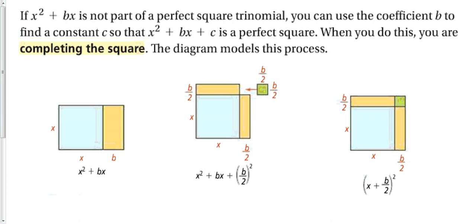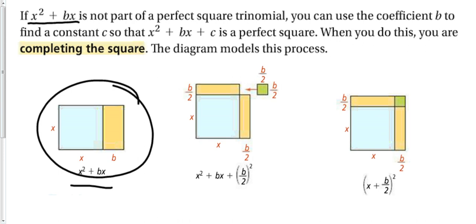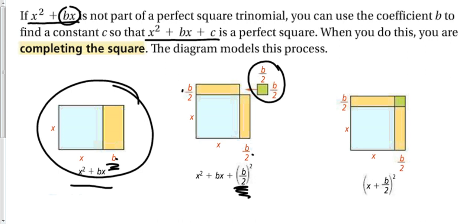There are plenty of problems when we complete the square that don't work out perfectly, which is why this is a good method for equations that don't quite factor. We can use the coefficient b to find the constant c that makes a perfect square trinomial. Take b, divide it by 2, and add (b/2) squared. Adding that value turns ax squared plus bx into a perfect square, and the factored form becomes x plus b over 2, the whole thing squared.